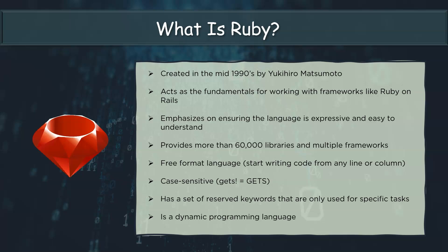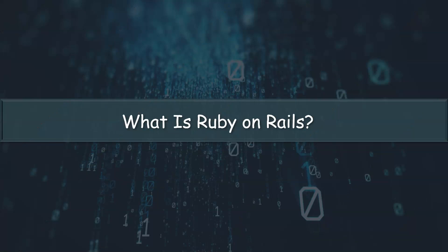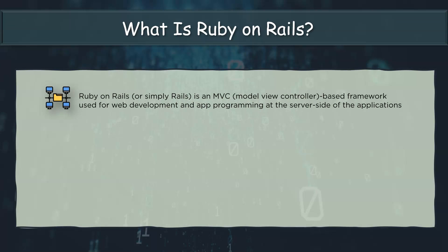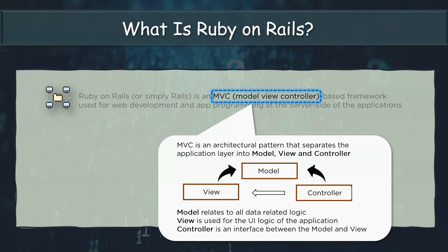Now that you know what Ruby is, let's look at what Ruby on Rails is. Ruby on Rails is a server-based MVC framework for web development and app programming. An MVC framework is an architectural pattern that separates the application layer into model, view, and controller parts. Model relates to all the data logic, view relates to the UI logic of the application, and controller is an interface between the model and the view.